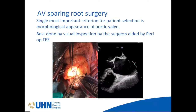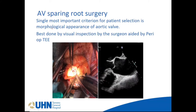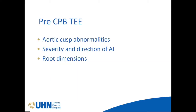For TEE evaluation of aortic valve-sparing surgery, the single most important criterion for patient selection is the morphological appearance of the aortic valve, best done by visual inspection aided by perioperative TEE. Pre-CPB TEE should assess: one, aortic cusp abnormalities; two, severity and direction of aortic insufficiency; three, root dimensions. I will go into detail for each of these.